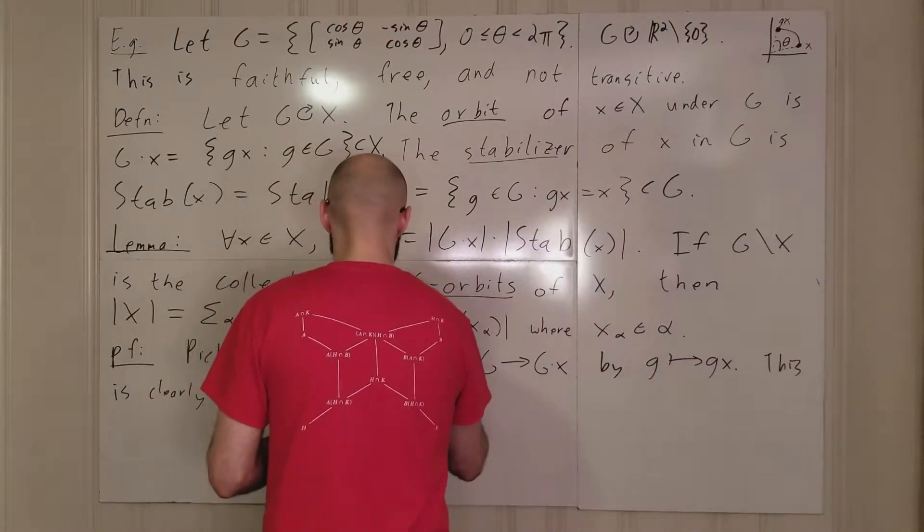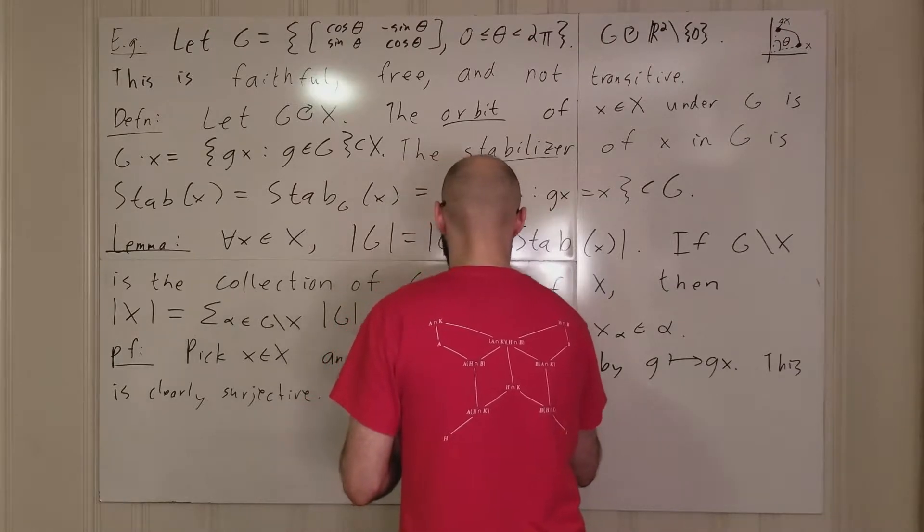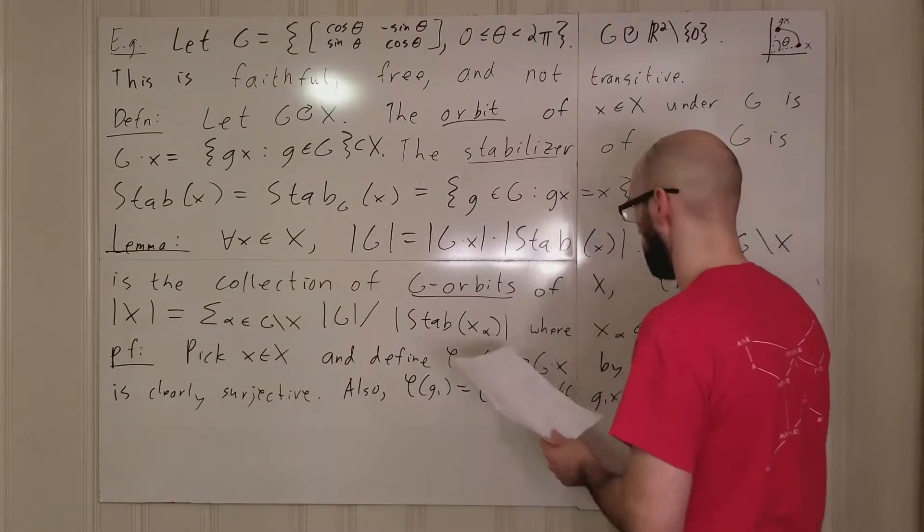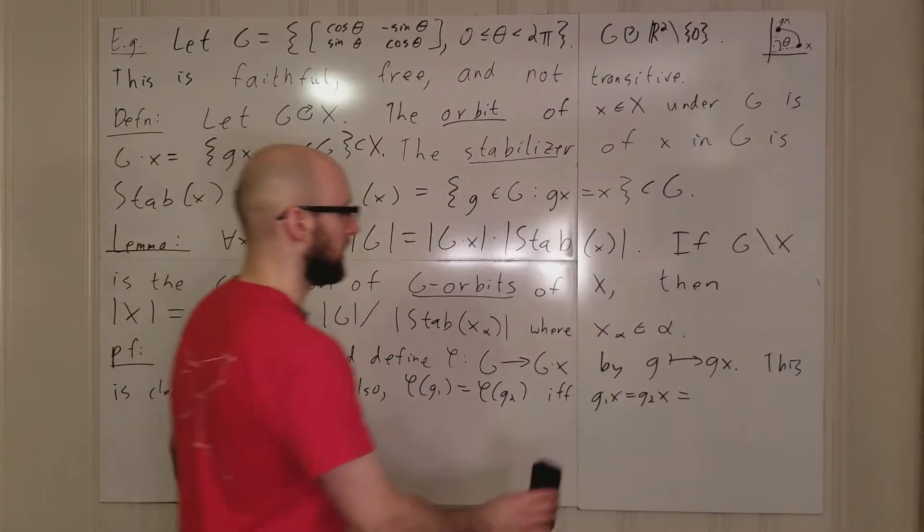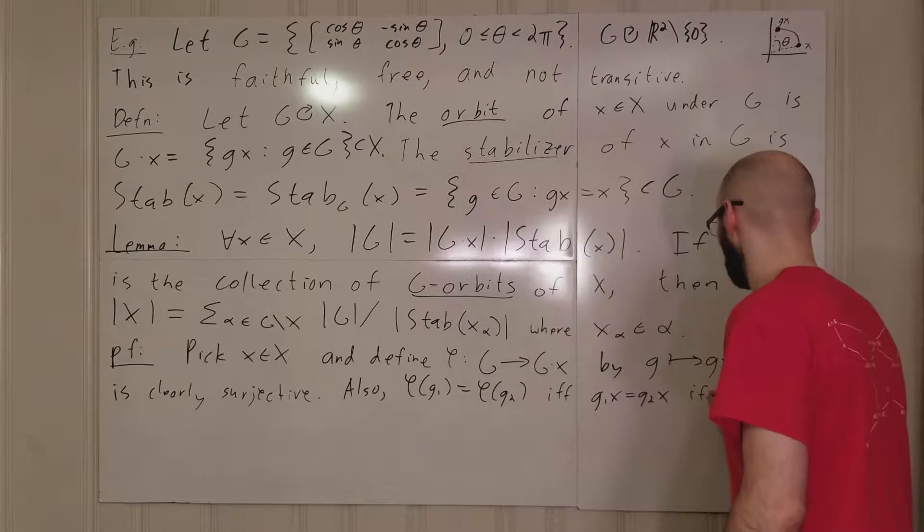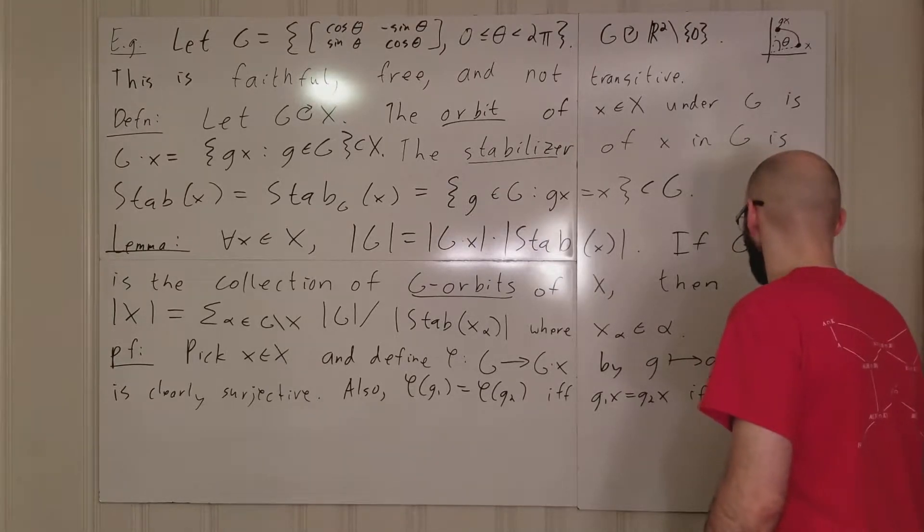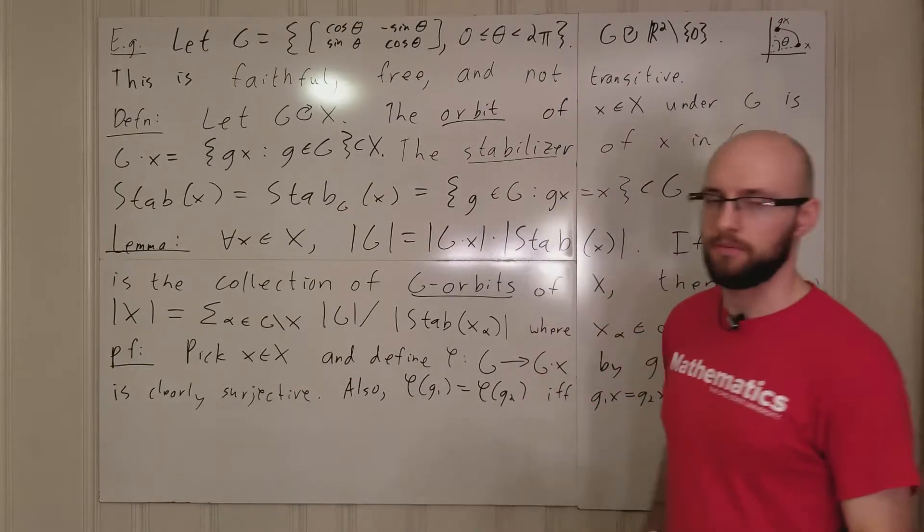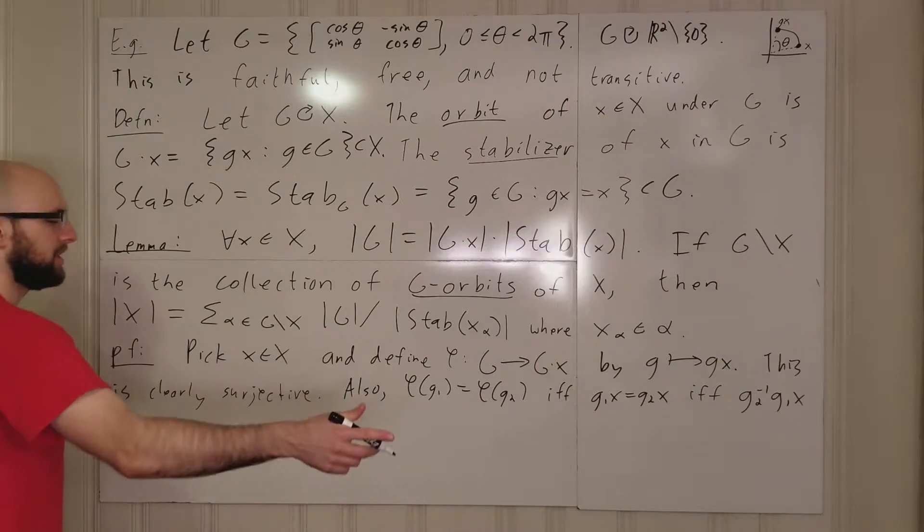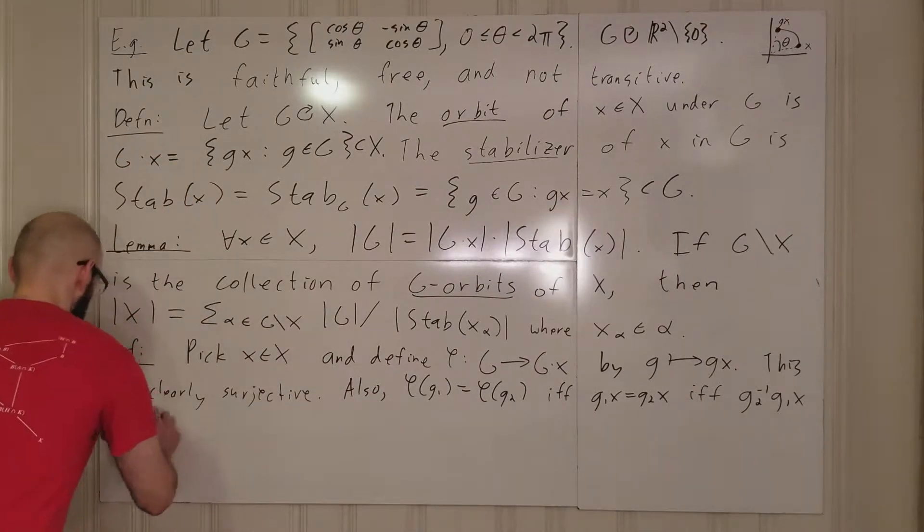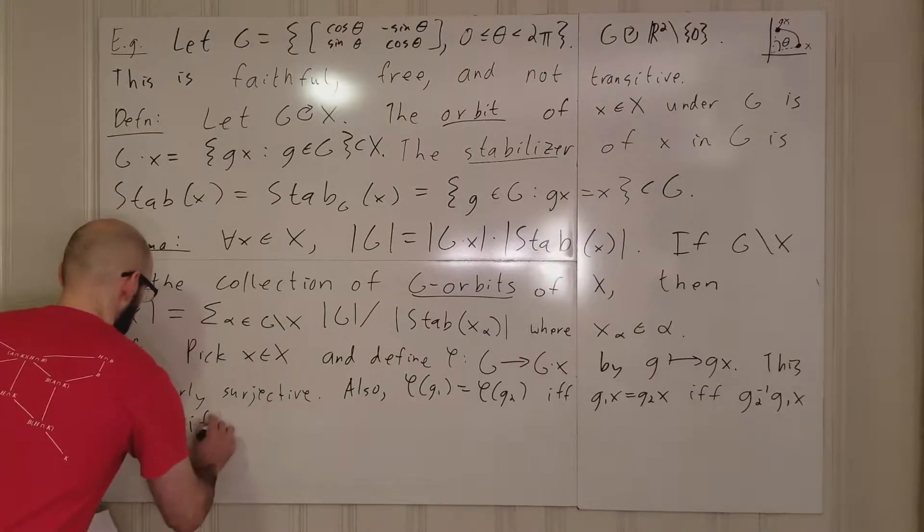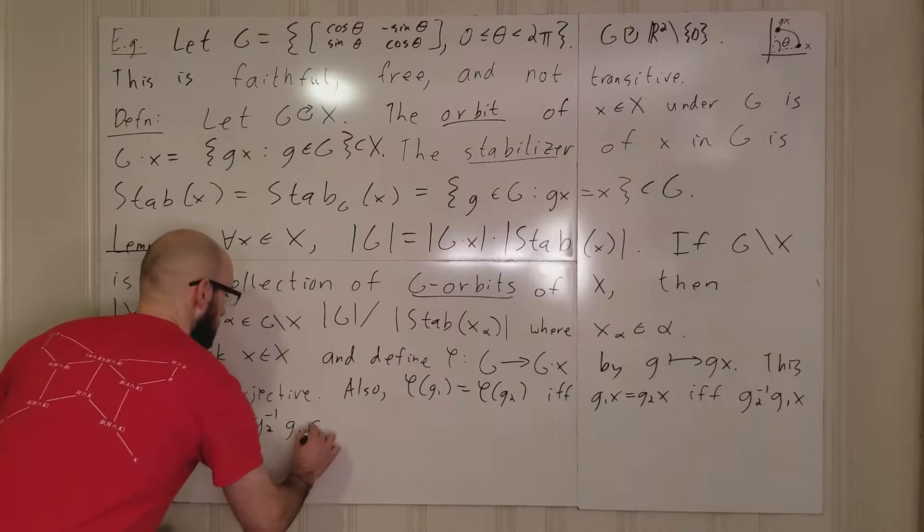Also, suppose we have phi of g1 equals phi of g2. Okay, so that means g1x equals g2x. So if g1x equals g2x, then we can multiply on the left on both sides by g2 inverse. So we're going to get g2 inverse g1x. And I'm not putting in parentheses here because it's all the same though. Wherever you put parentheses, it doesn't matter because of the properties of group actions. But what would we get on the right? We'd get g2 inverse g2x, which is just x.